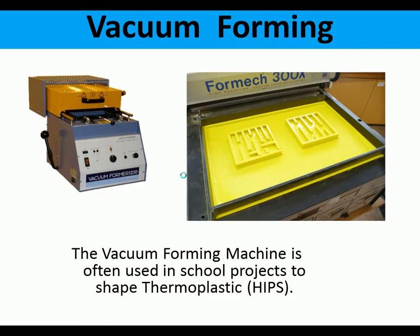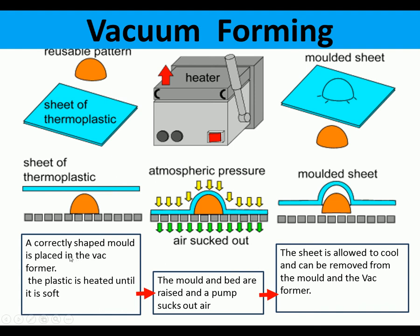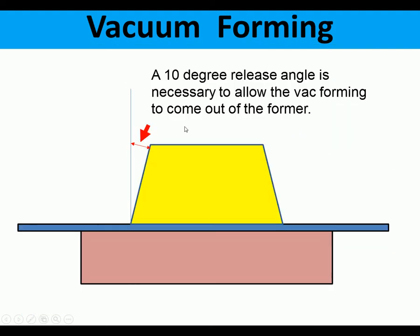Vacuum forming is often used in schools to shape thermoplastics such as HIPS. The process: a correctly shaped mould is placed in the vacuum former, the plastic is heated until it's soft, the mould and bed are raised, an air pump sucks the air out, and atmospheric pressure forces down on the mould. The sheet is then allowed to cool and removed from the vacuum former. The mould is removed and the sheet is often trimmed to size. A 10-degree release angle is necessary to allow the vacuum forming to come out of the former.